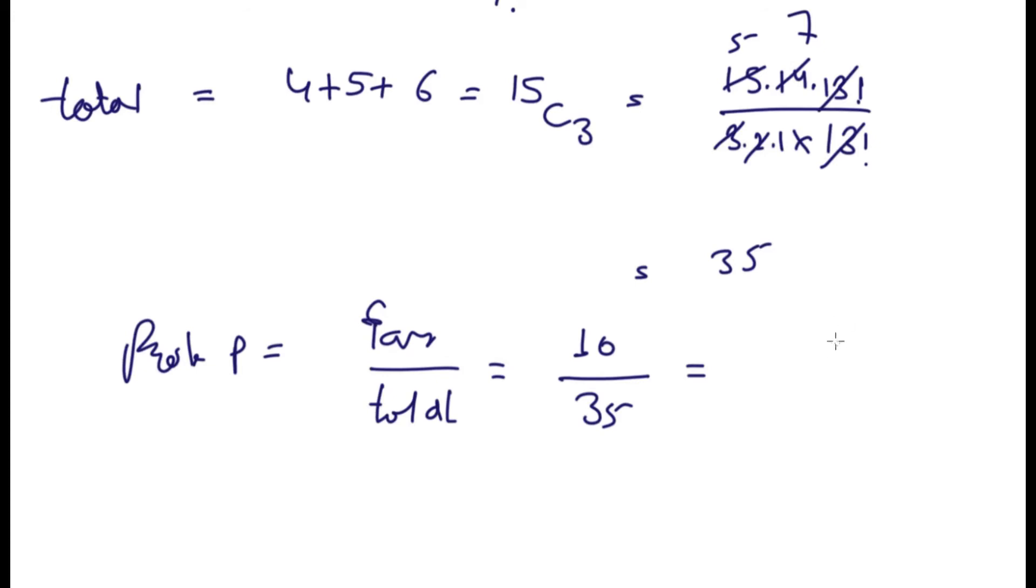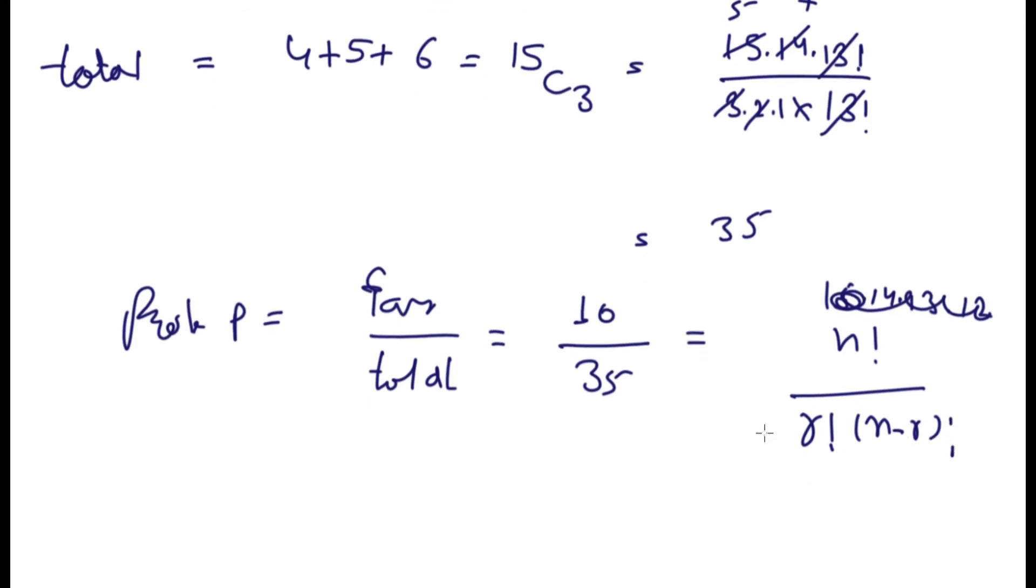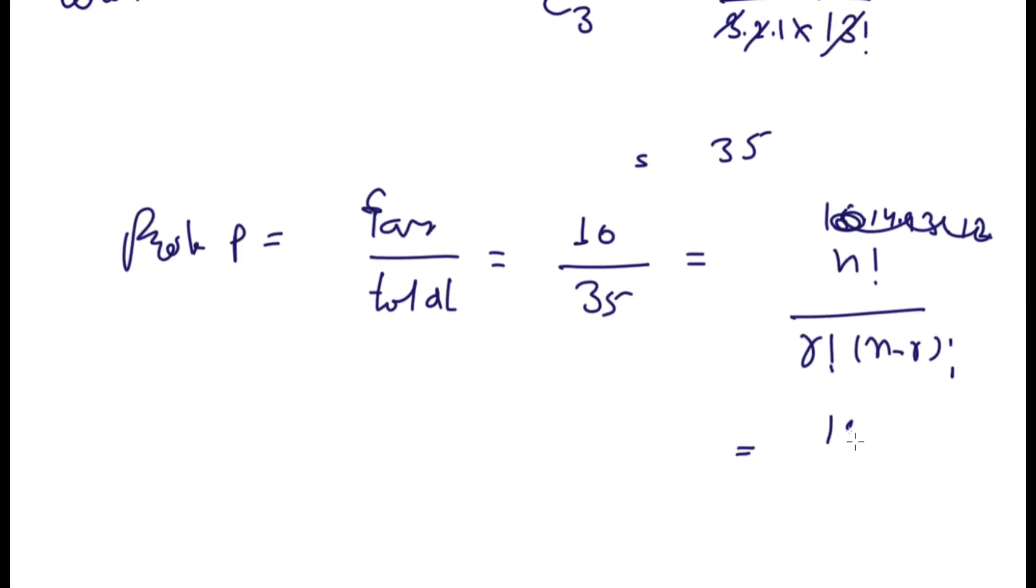Okay, there is some mistake actually. 15, 14, and then 12 should come. Because if you solve this by n factorial upon r factorial times n minus r factorial, we'll get the product like 15 factorial upon 3 factorial and 15 minus 3 factorial.